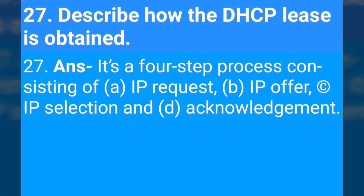Describe how a DHCP lease is obtained. It is a four-step process consisting of IP request, IP offer, IP selection, and acknowledgement.